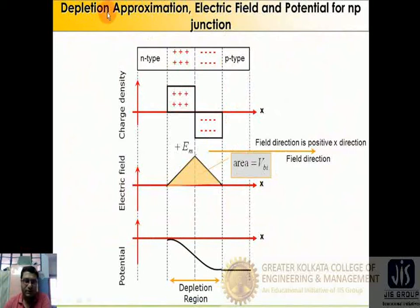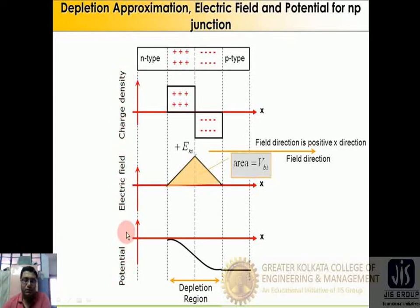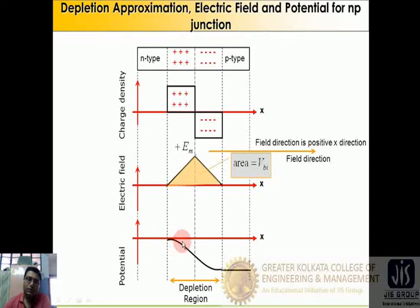In another diagram we can see the charge distributions across the junction. In the depletion region, the N-side has a positive charge and the P-side has a negative charge. This is represented along with the charge density, electric field, and potential profiles. The potential is initially neutral on the N side; as electrons diffuse toward the P-type, the negative potential increases, producing the characteristic potential profile across the depletion region.